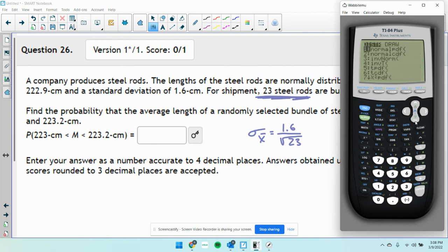Normal CDF. Lower bound is going to be 223, upper bound is going to be 223.2. The mean is 222.9, and the standard deviation is 1.6 divided by the square root of 23. 0.1979.